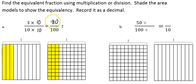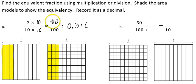Now let's look at the decimal form. I can say that 3 tenths, as a fraction, is written as 0.3. I would read this decimal as 3 tenths. We can also write the decimal as 0.30. This decimal is 30 hundredths, and you can see by our fraction models that 3 tenths is equivalent to 30 hundredths. These decimals mean the exact same thing.